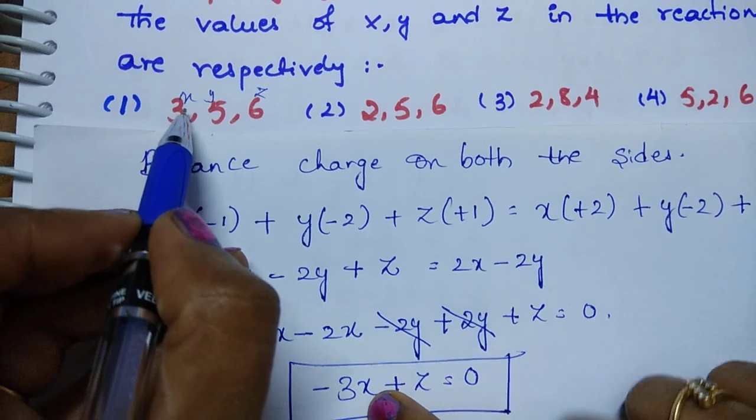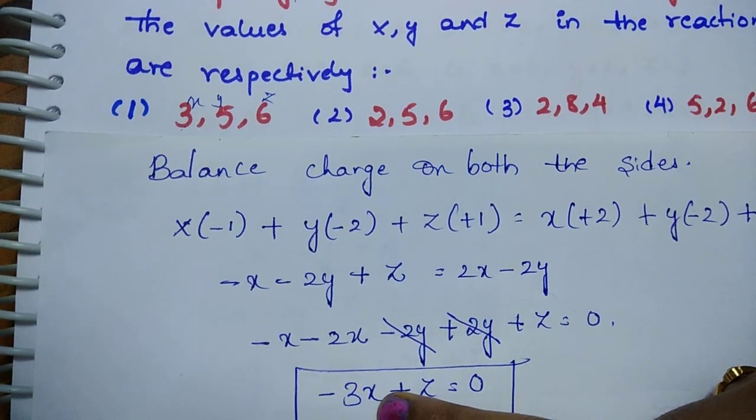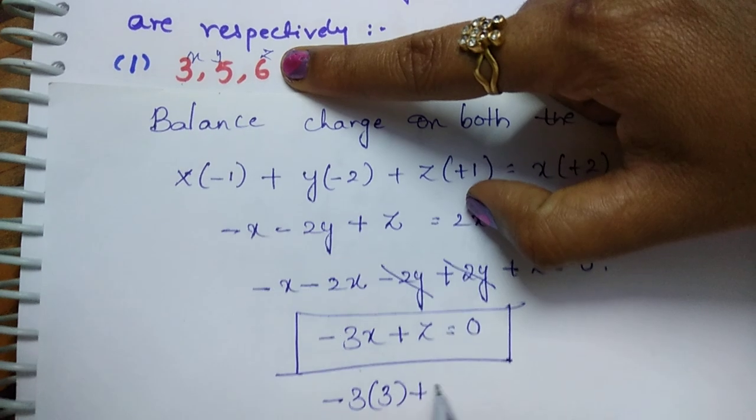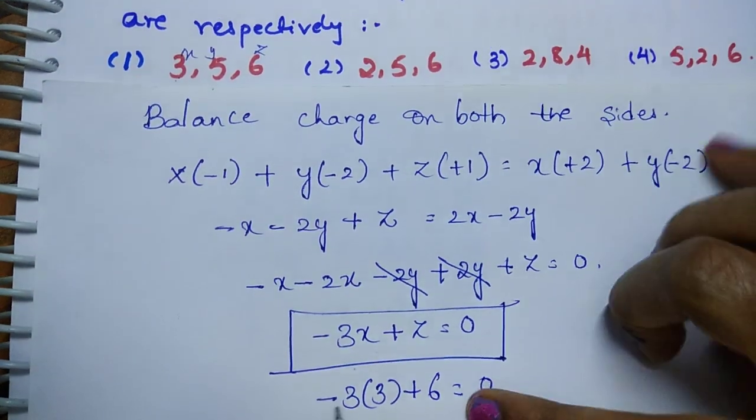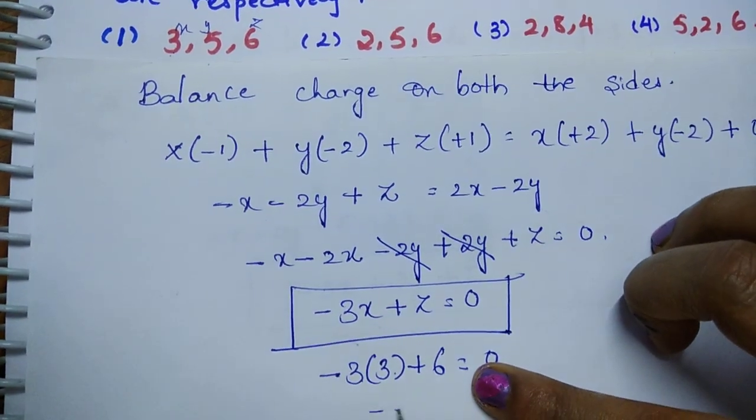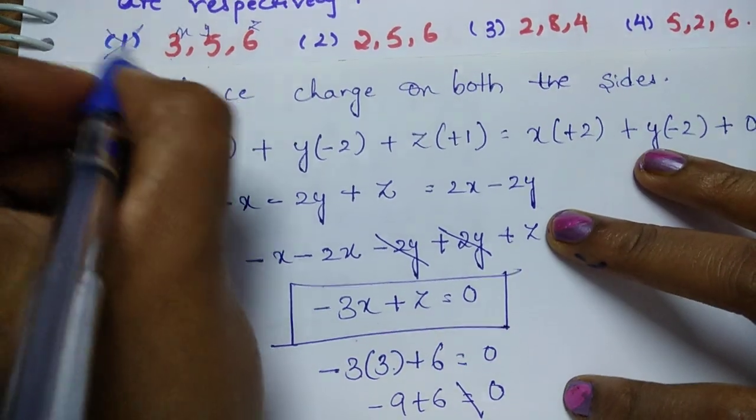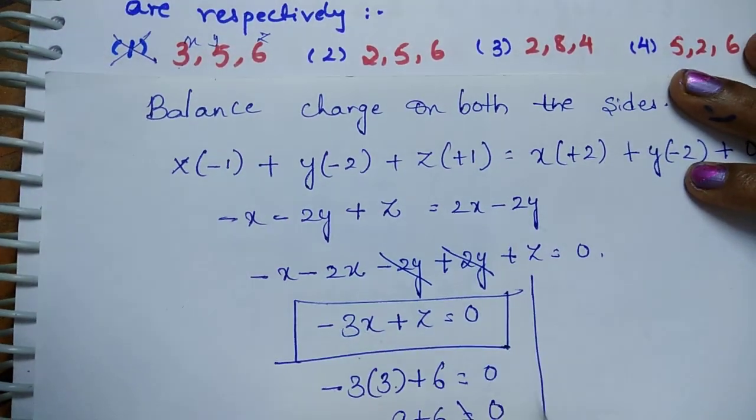Minus 9 plus 6 is not equal to 0, so first option is not correct. Just see second option.